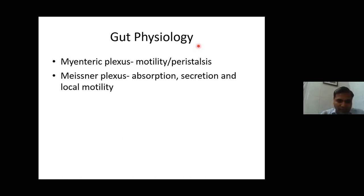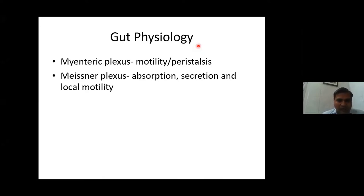In the intestinal wall there are two plexuses: the myenteric plexus and the Meissner's plexus. The myenteric plexus controls the motility of the gut, while Meissner's plexus is associated with absorption of fluids, secretion, and local motility.